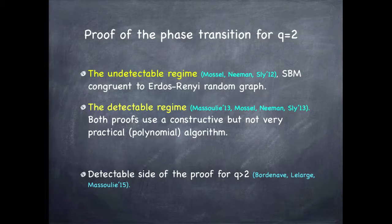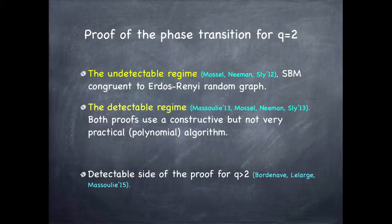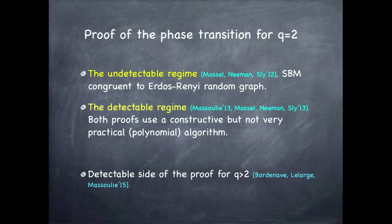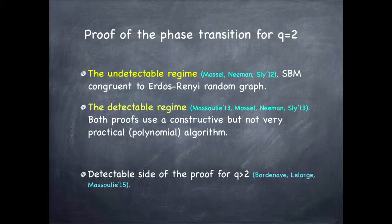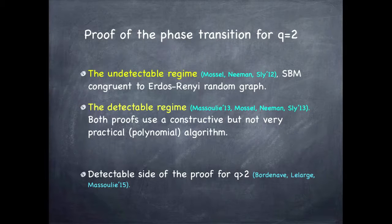For two groups this is now a fully rigorous statement: below the phase transition the graphs are contiguous to Erdős–Rényi random graphs, and above the phase transition there are algorithms that achieve positive correlation with the actual group assignment. The detectable side is also proven for more than two groups, but the undetectable side is tricky for more than two groups, and you will understand right away why.